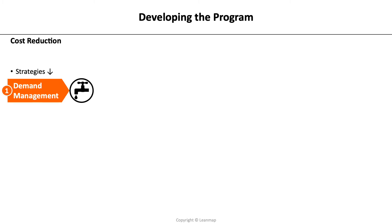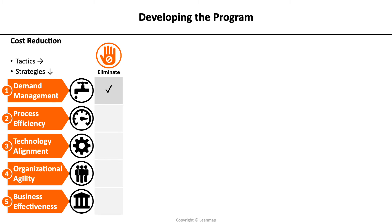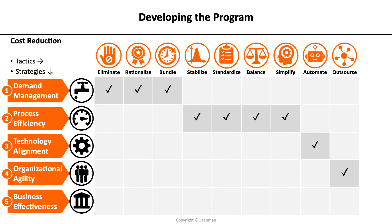Developing the cost reduction program — let's map it. There are cost reduction elements: the five strategies — demand management, process efficiency, technology alignment, organizational agility and business effectiveness — and the ten tactics: eliminate, rationalize, bundle, stabilize, standardize, balance, simplify, automate, outsource and centralize. The first three tactics — eliminate, rationalize and bundle — are elements of demand management. Process efficiency involves stabilize, standardize, balance and simplify. Technology alignment focuses on smart automation. Organizational agility focuses on outsourcing and cross-skilling. Business effectiveness focuses on centralizing activities and evolving the business model.